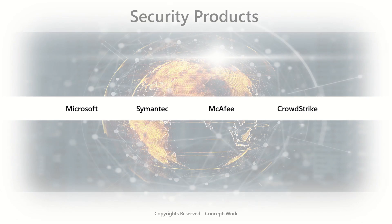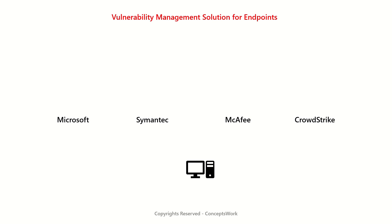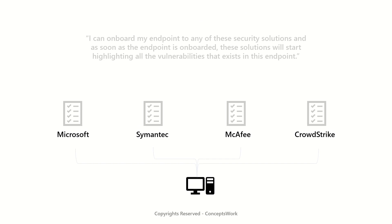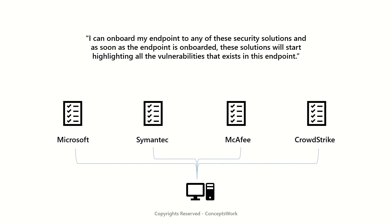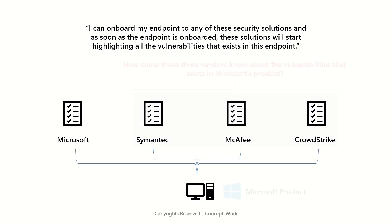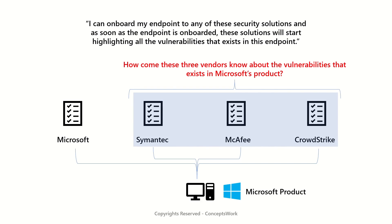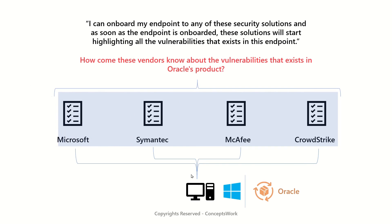Let's assume I have a security solution from all these vendors and the purpose is endpoint vulnerability management. As soon as I onboard one of my endpoints to these security solutions, they will start highlighting all the vulnerabilities that exist on that endpoint. But what we have to understand is: if the endpoint has Windows 10, which is a Microsoft product, how come these three other vendors know about the vulnerabilities that exist in Windows 10?